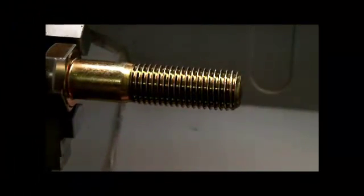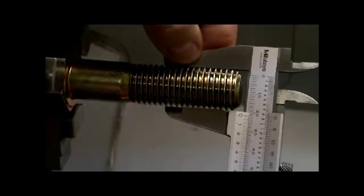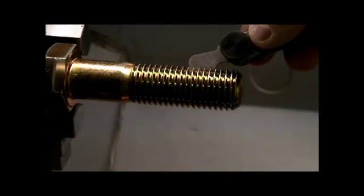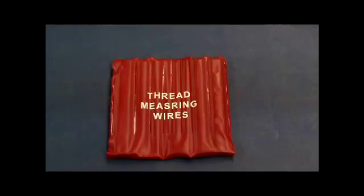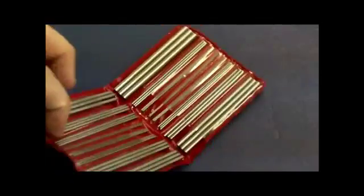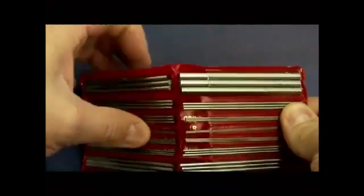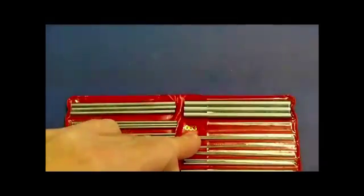Before we measure the thread, we want to make sure we have the right outside diameter, assuming you're checking a thread rather than cutting it. We want to check the threads per inch, so in this case we have a 7/8 diameter thread with 9 threads to the inch. Here's a set of thread wires, and this package has several different selections of wires. There are three wires of the same diameter, and several different diameters.